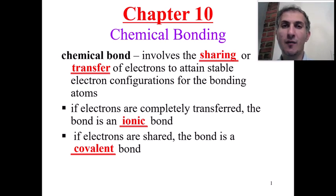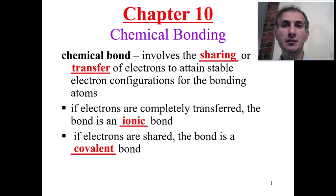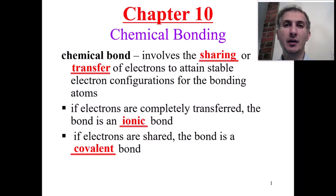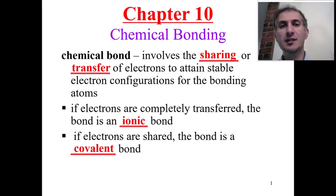Covalent bonds involve non-metal and non-metal — sharing between non-metals. Ionic bonds occur whenever we have metal and non-metals, whenever electrons transfer from metals to non-metals. The compounds made by covalent bonds we call covalent compounds, and ionic bonds make ionic compounds.